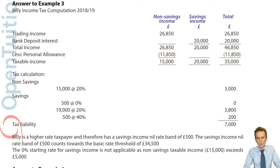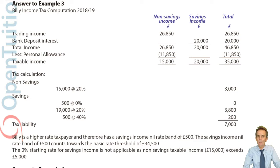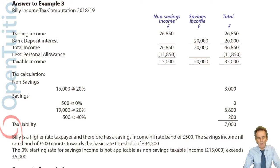At the end of our previous session, we saw how to deal with the taxability of savings income: firstly applying, if applicable, the 0% starting rate band of up to £5,000, and thereafter the savings income nil rate band — £1,000 for basic rate taxpayers, reduced to £500 for higher rate taxpayers, and nothing at all for additional rate taxpayers.